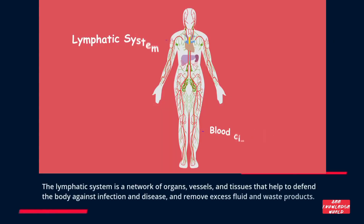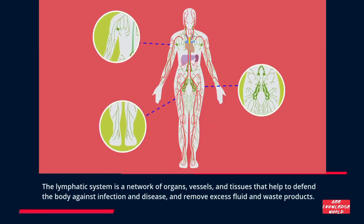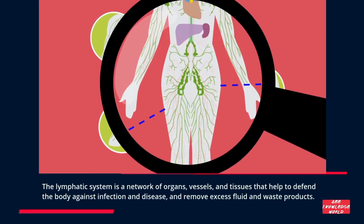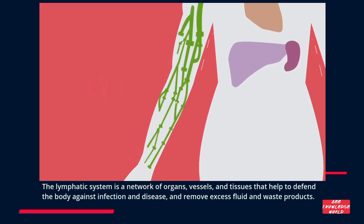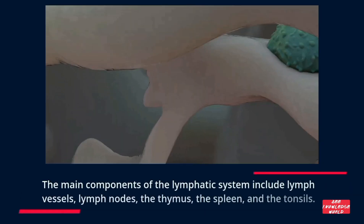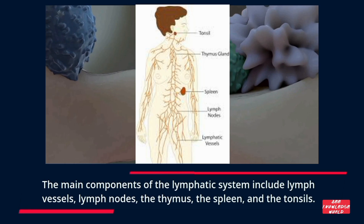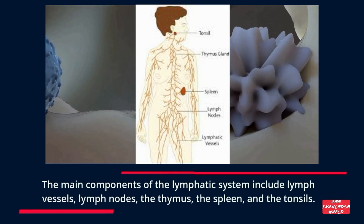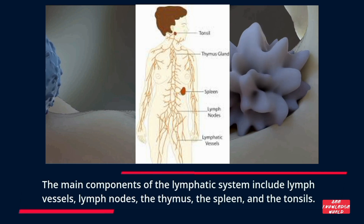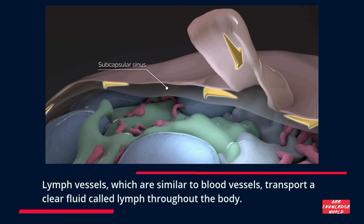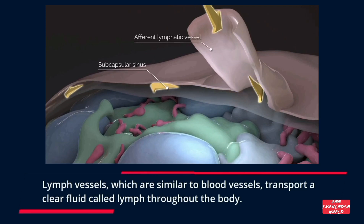The lymphatic system is a network of organs, vessels, and tissues that help to defend the body against infection and disease, and remove excess fluid and waste products. The main components of the lymphatic system include lymph vessels, lymph nodes, the thymus, the spleen, and the tonsils.